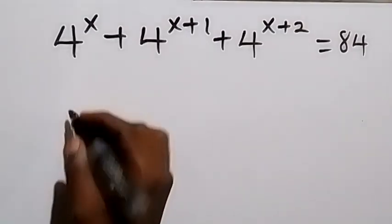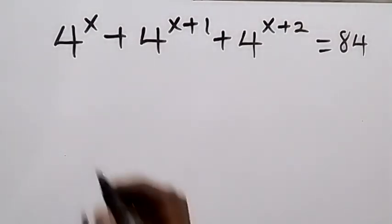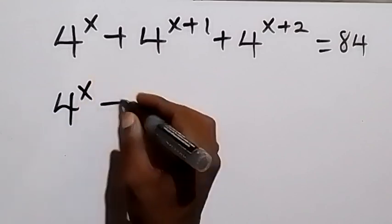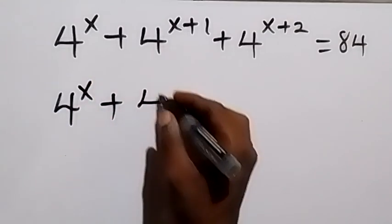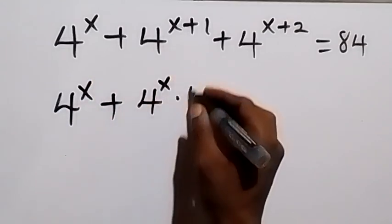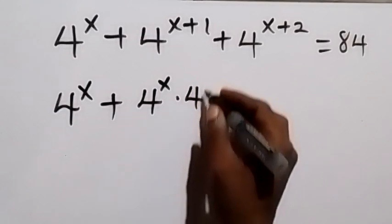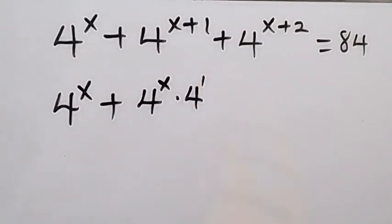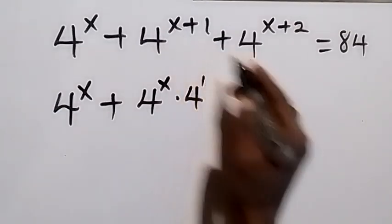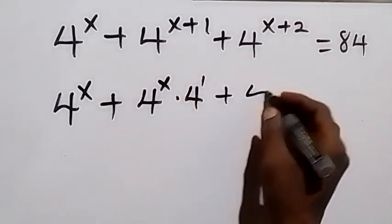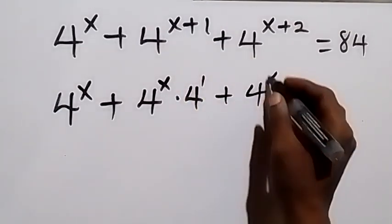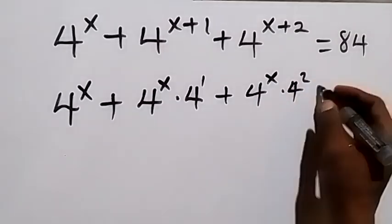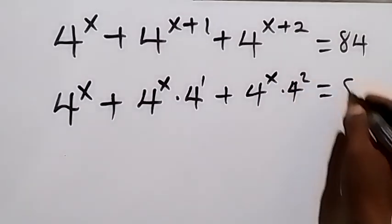From the law of indices, we can write this as 4 raised to power x, plus 4 raised to power x times 4 raised to power 1 — and 4 raised to power 1 is 4 — then plus 4 raised to power x times 4 squared, which is equal to 84.